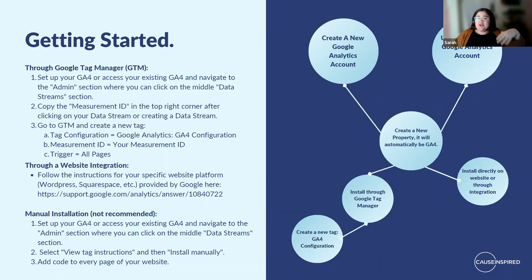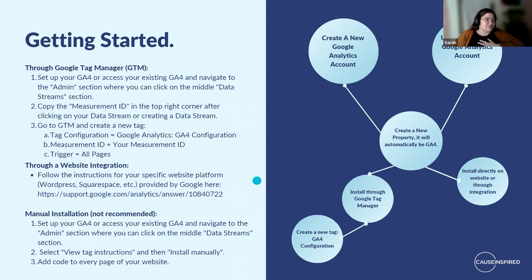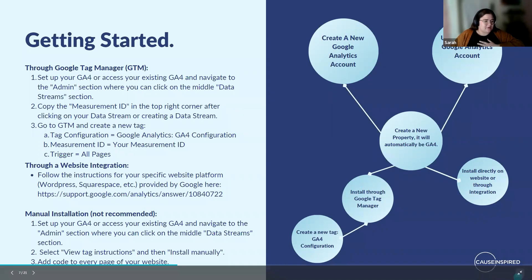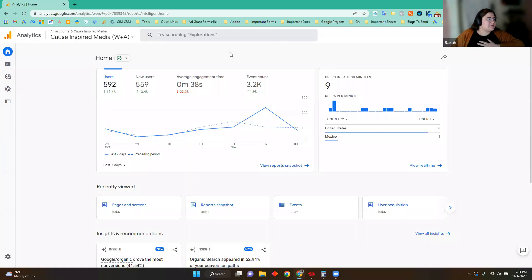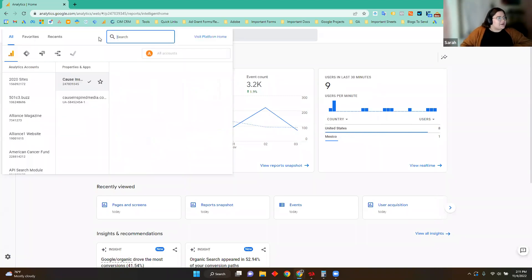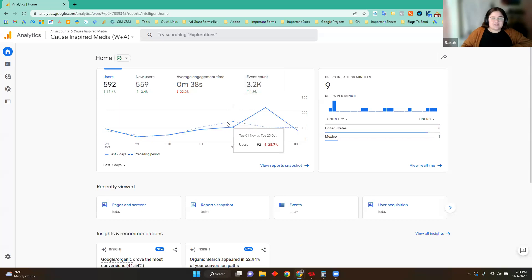You have to work really hard right now if you do not want to set up a GA4. If you have Google Tag Manager installed on your website, my preferred and recommended way of installing GA4 is through Tag Manager. You also have the option to install it directly on your website through an integration. I've loaded into the Cause Inspired GA4 here. Let's pretend this is my account — these are my properties — and I want to go ahead and create a new GA4 property within my account.